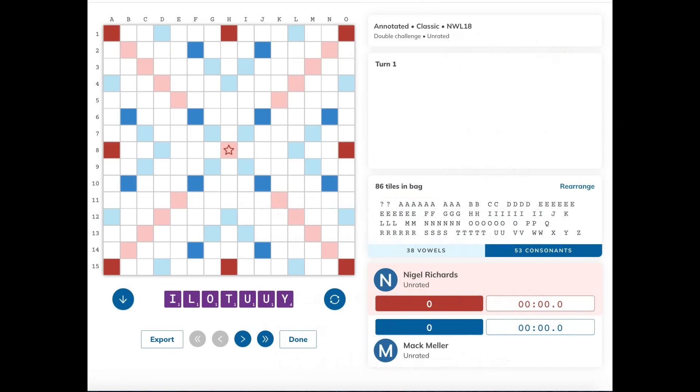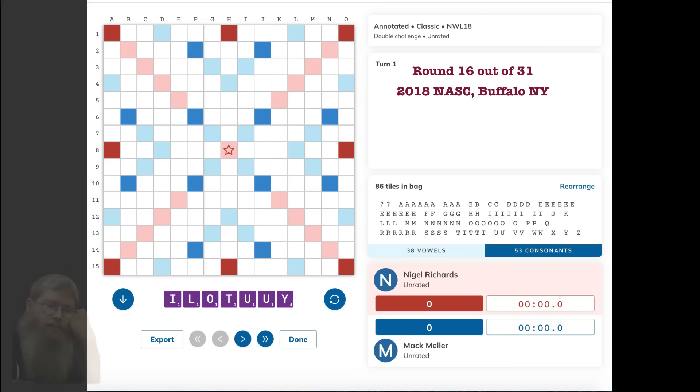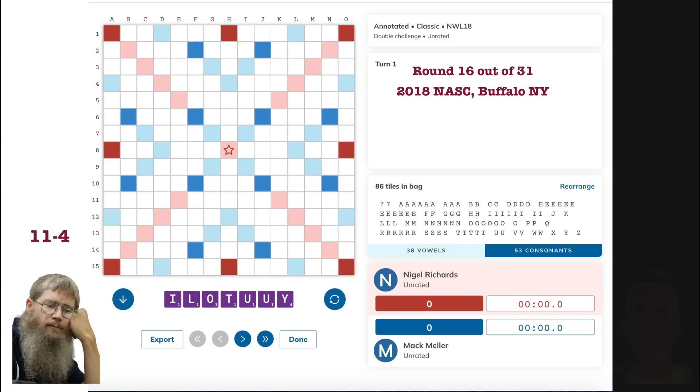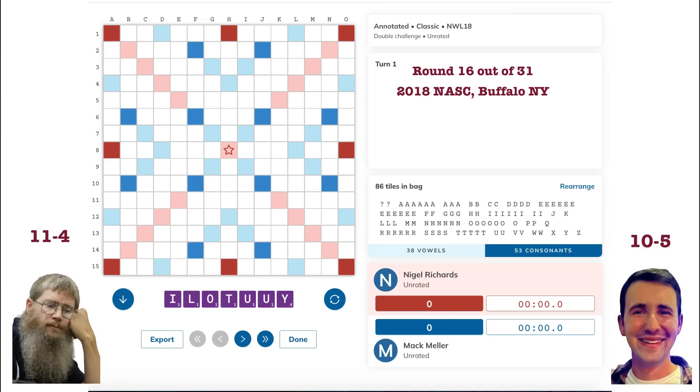This game we're about to look at was round 16 out of 31 of the 2018 North American Scrabble championships held in Buffalo, New York. Going into this game, Nigel was 11-4 and I was 10-5, so we were both right in the thick of things vying for the top spots along with many other top experts. So as with all games at Scrabble Nationals, this was a very important match.